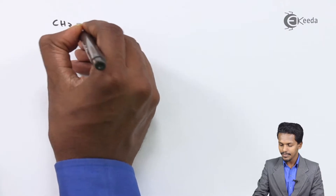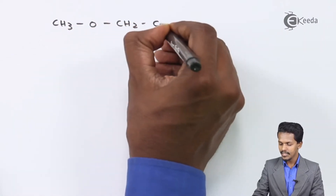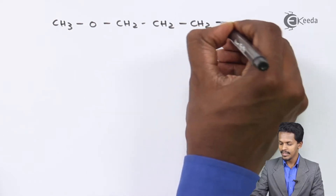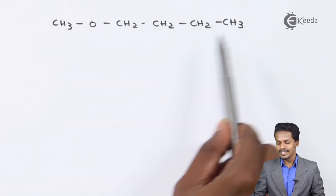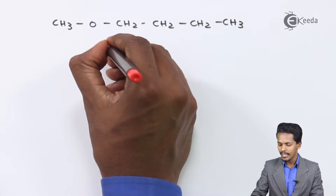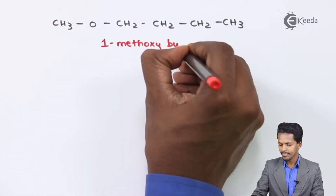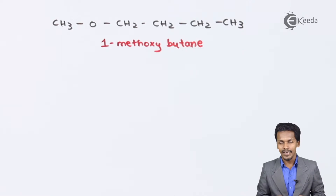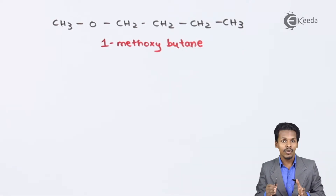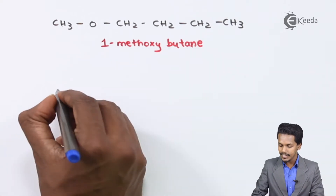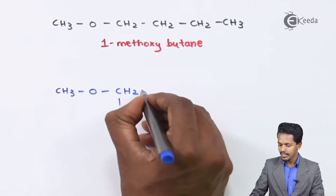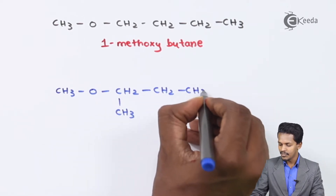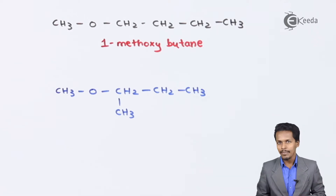For example, suppose we have CH3-O-CH2CH2CH2CH3. The name of this compound is 1-methoxybutane. Now, as per the definition, if there is a different arrangement in the chain of the alkyl group, we can also write it as CH3-O-CH2-CH(CH3)-CH3, which shows a branched structure.